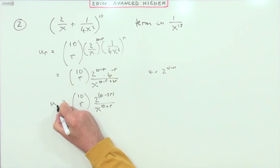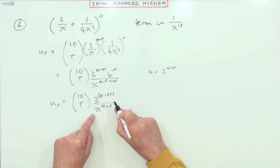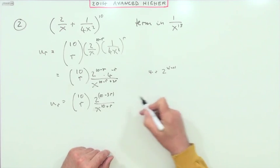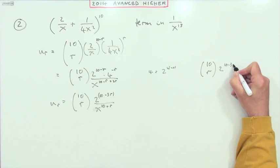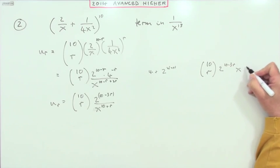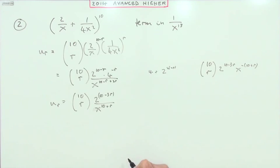The alternative would have been if you'd kept that on top with all the negatives - it'd say the same thing, it's just that you'd have 10 choose r, 2 to the 10 minus 3r, and x to the negative 10 minus r, or negative 10 plus r, whichever way you put it.